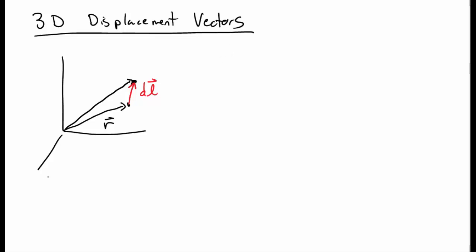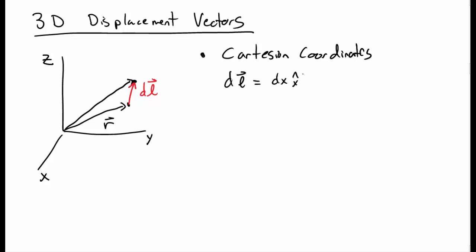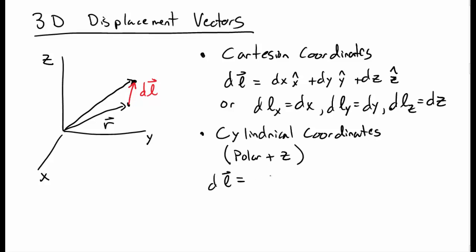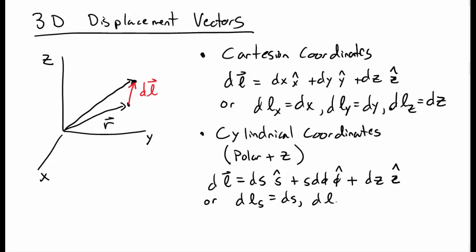How does this work in 3D? It's pretty much the same thing. We have some position vector and a displacement dl vector to a new point, and we want to know the components in different coordinates. In Cartesian coordinates it's just dx x-hat plus dy y-hat plus dz z-hat. In cylindrical coordinates — which are just polar coordinates with a z direction tacked on — dl vector is ds s-hat plus s dphi phi-hat plus dz z-hat. The displacement in the s and phi directions are as before, and the displacement in the z direction is just dz.